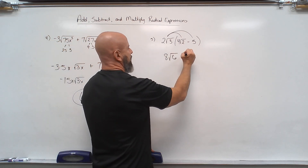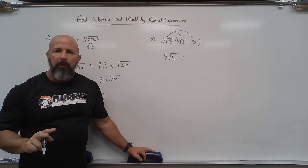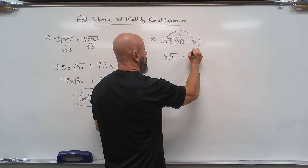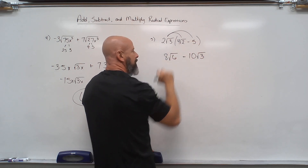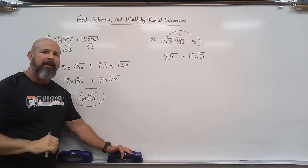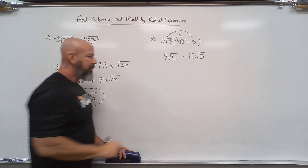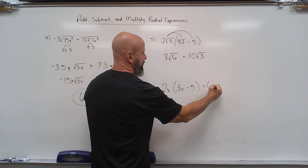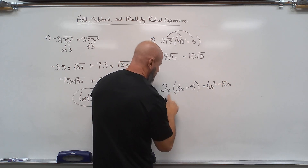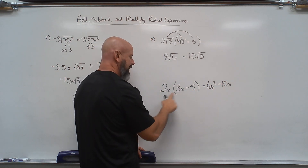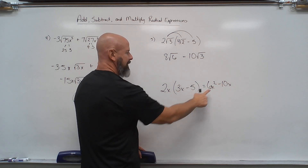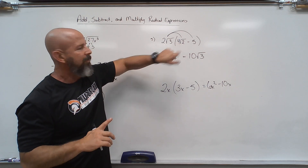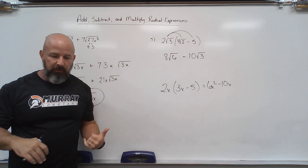Then positive times negative is a minus. I've got 2 root 3 times 5: outside with outside is 2 times 5 equals 10, and then I just have a root 3 — I don't have a radical piece sitting there to multiply that 3 by, so it just tags along. It's kind of like when you distributed with an x and the x just tagged along.